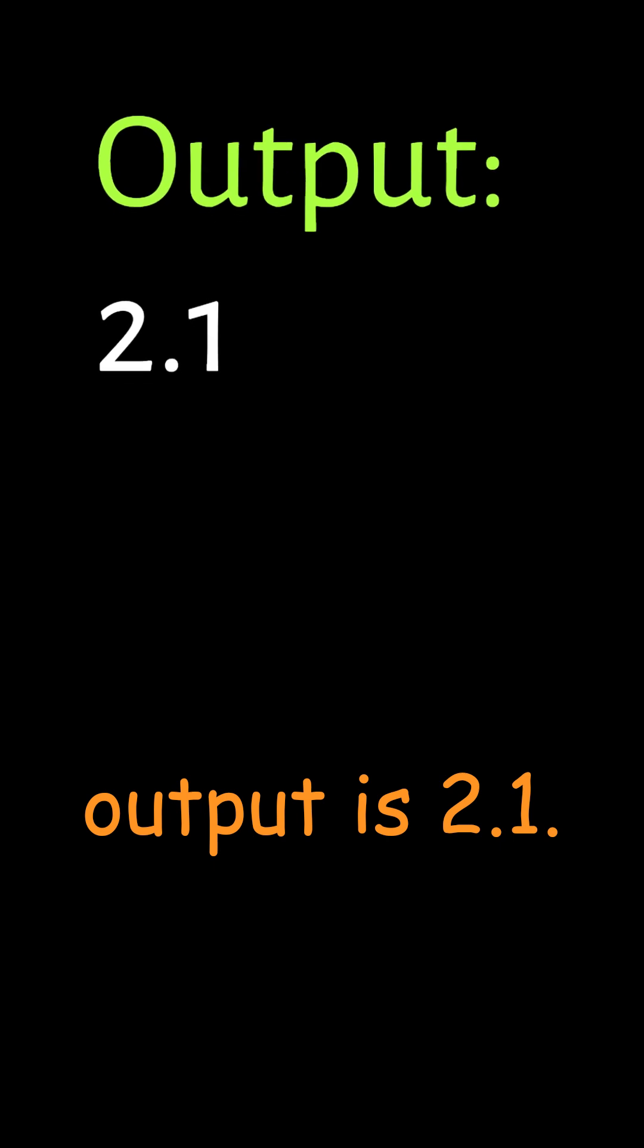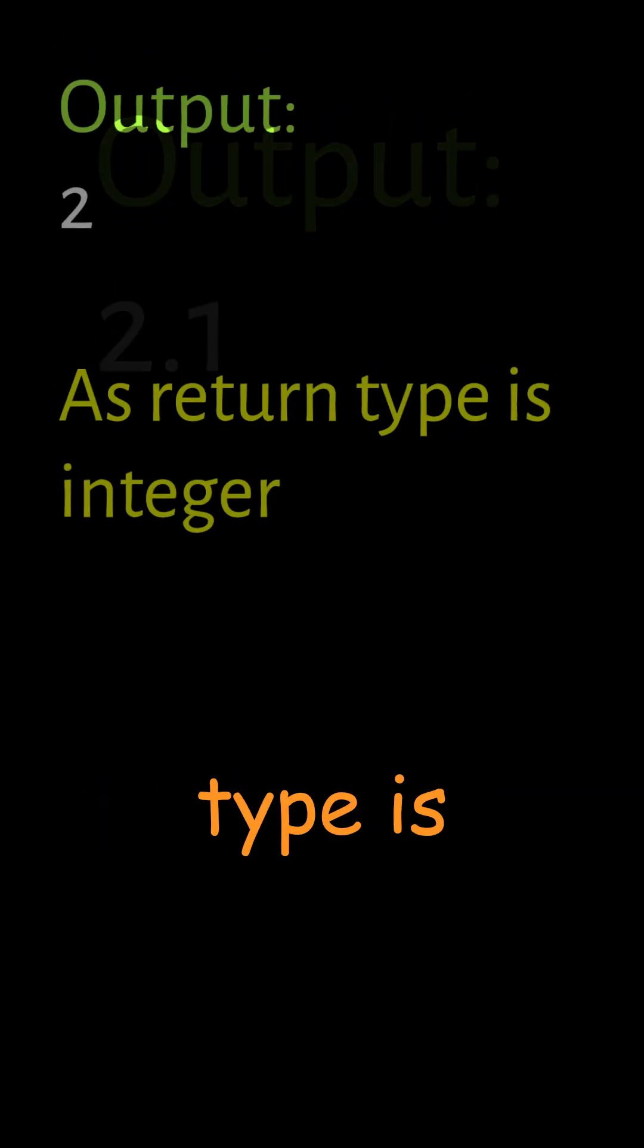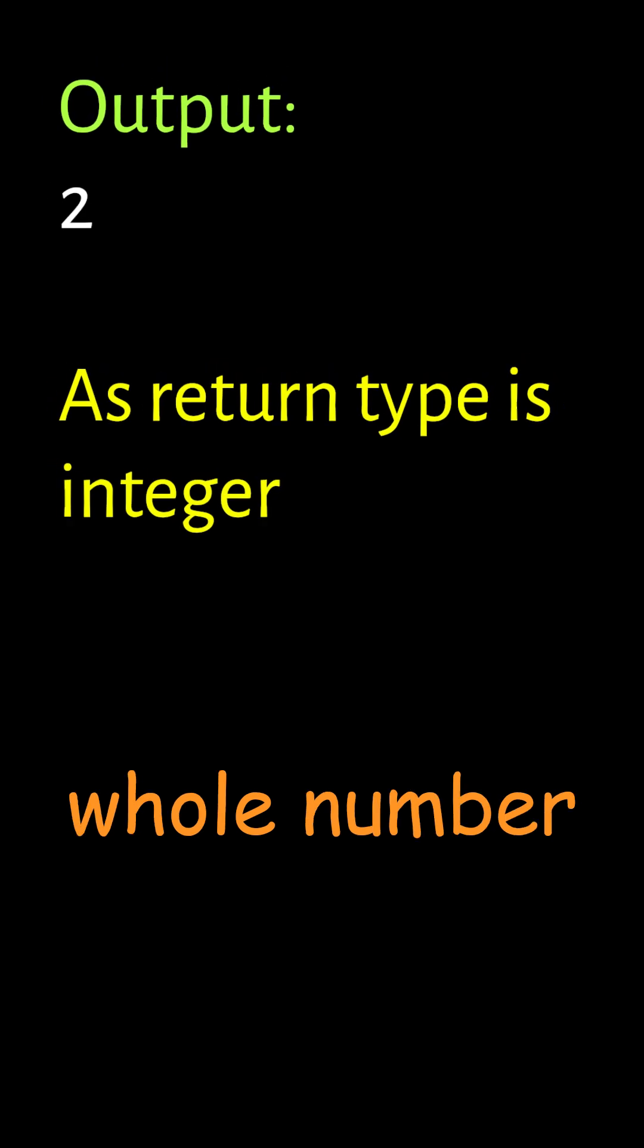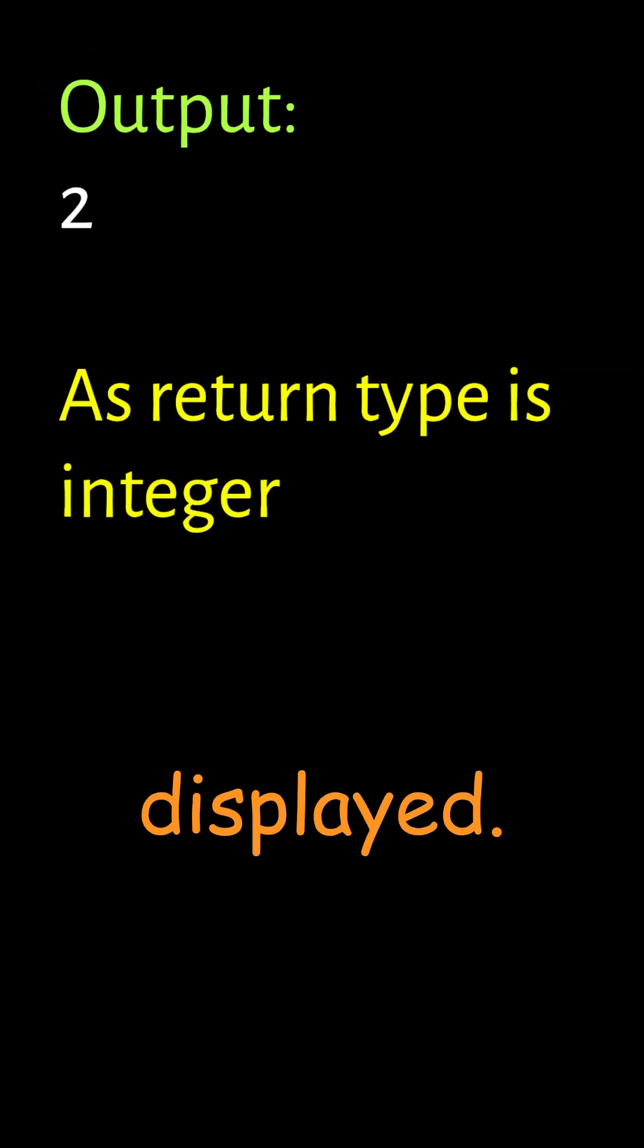The output is 2.1. As the return type is integer, the fraction will be removed and whole number 2 will be returned and displayed.